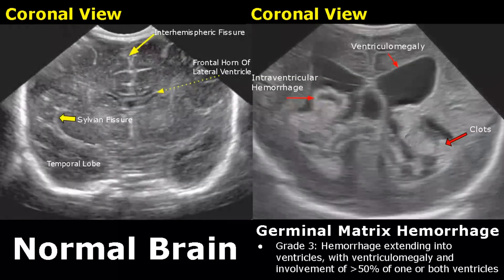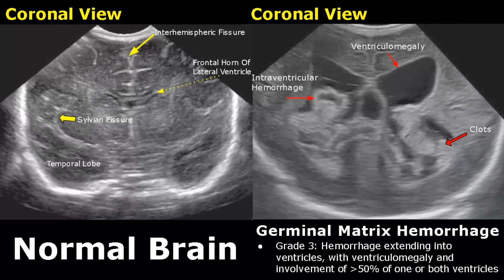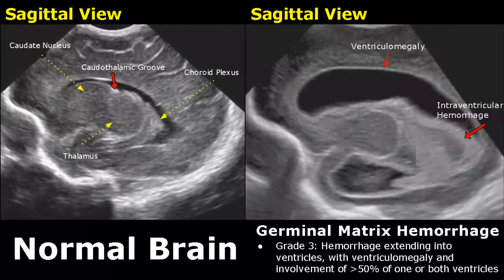In grade three, the hemorrhage will extend into the ventricles and take up to 50 percent of the ventricle, and ventriculomegaly will also be present. This is grade three hemorrhage in sagittal view — the ventricle is dilated and there is a greater degree of intraventricular hemorrhage.